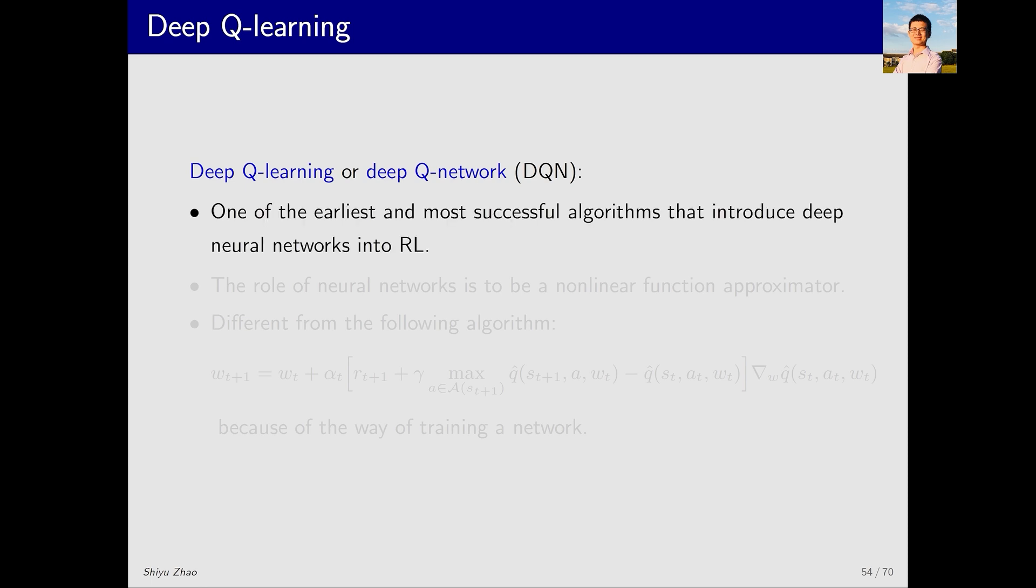This algorithm was one of the first and most successful attempts to introduce deep neural networks into reinforcement learning. Of course it wasn't the very first, as neural networks had been introduced into reinforcement learning before, but not very successfully. Its success mainly lies in two aspects, application and methodology.